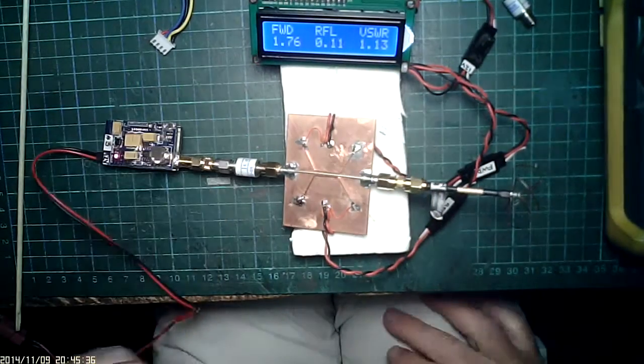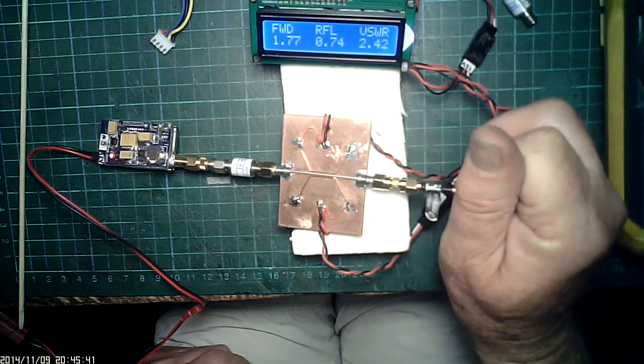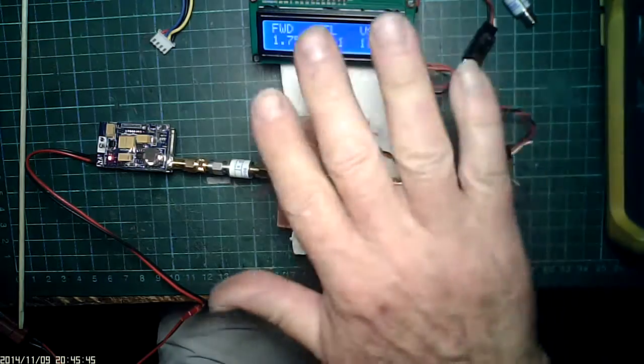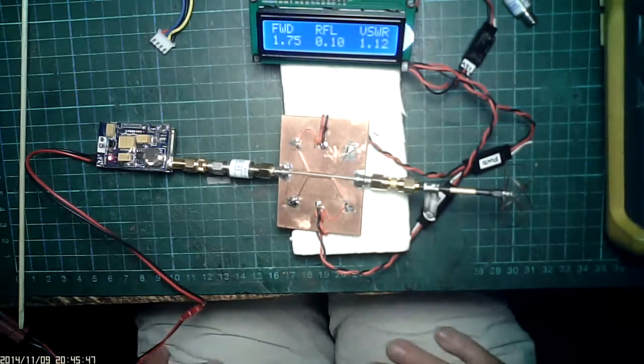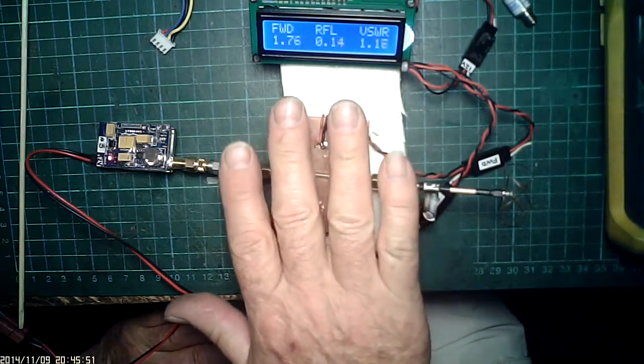Put your hand near the antenna, you can grab hold of it and see what happens to the VSWR. It sends the numbers crazy. Also if you put your hand near your coupler, it messes things up a bit.